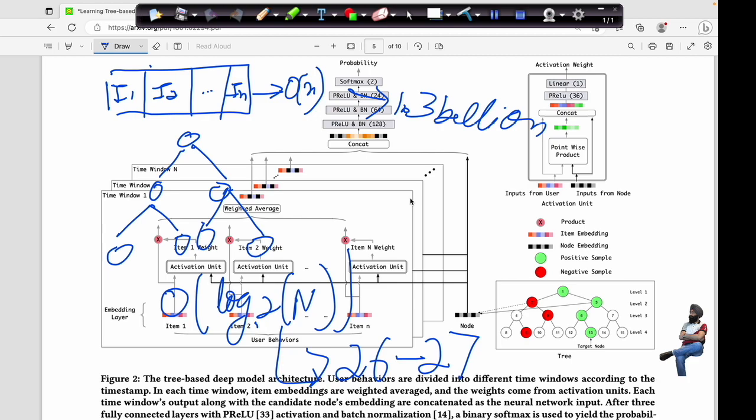To keep it simple, let's suppose Alibaba has billions of products. What they can do is encode all those products into the leaf nodes of a max heap or a binary tree. After encoding all the products, they are able to reduce the time complexity by logarithmic times.